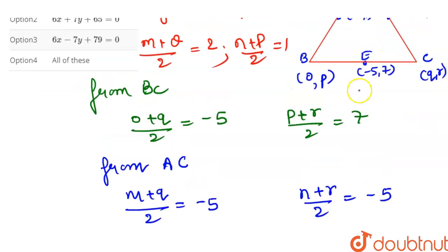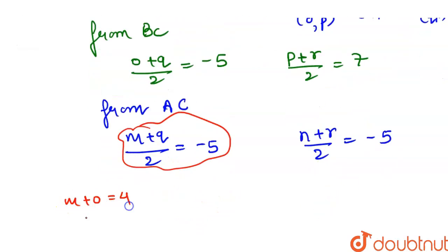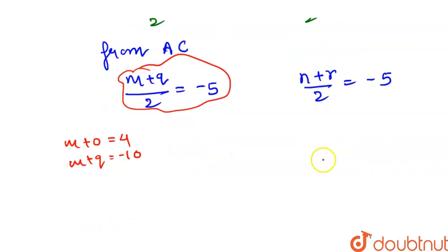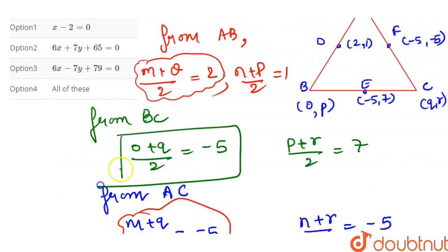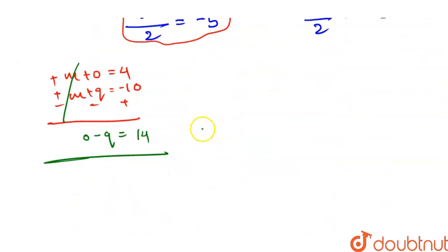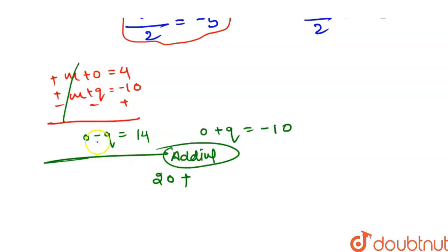Now we solve the first three x-coordinate relations. From AB: m+o = 4. From AC: m+q = -10. Subtracting these gives o-q = 14. We also have from BC: o+q = -10. Adding o-q = 14 and o+q = -10 gives 2o = 4, so o = 2.